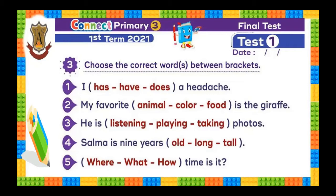Number two: My favorite animal is a giraffe. Number three: He is listening, playing, taking photos. Which one is correct? Taking photos.